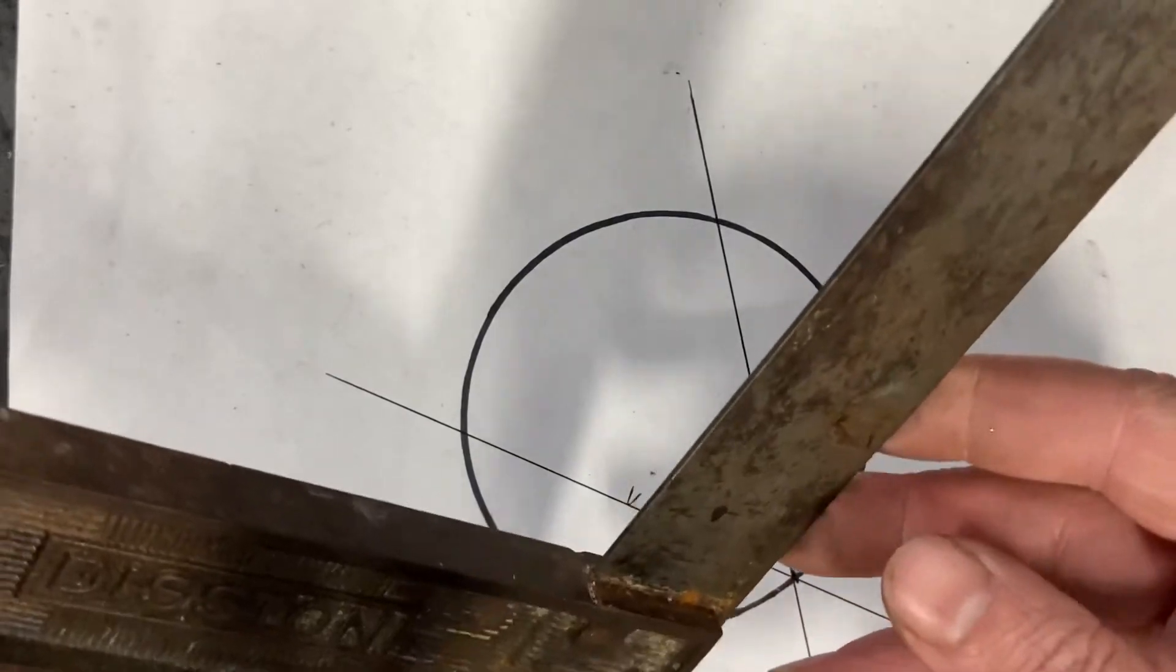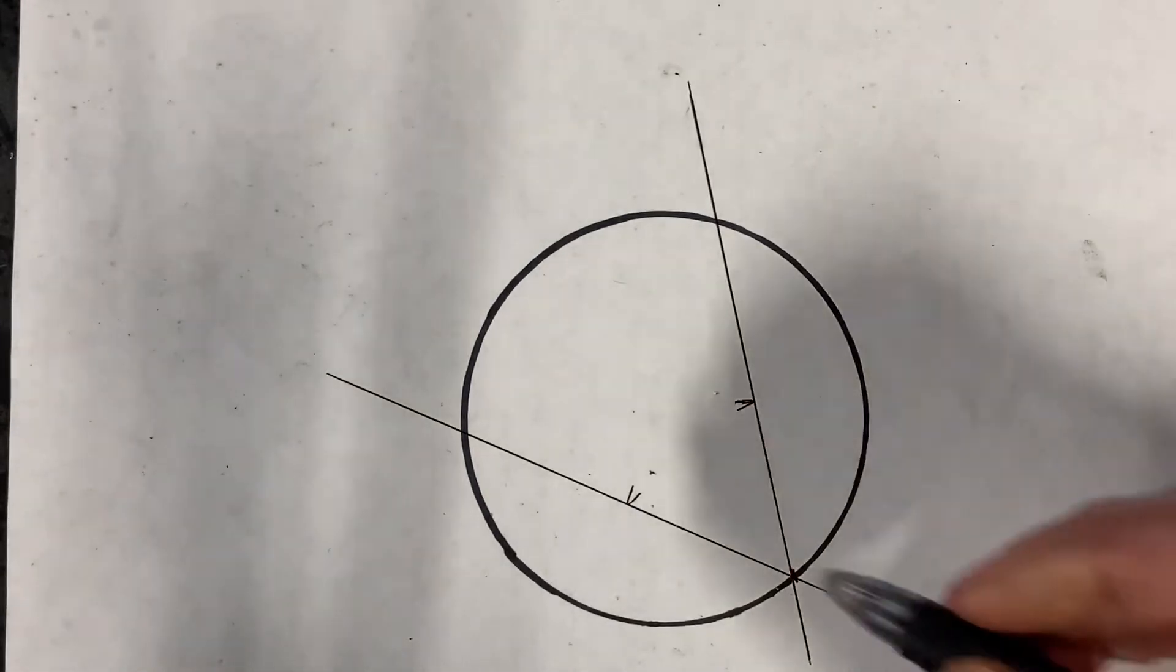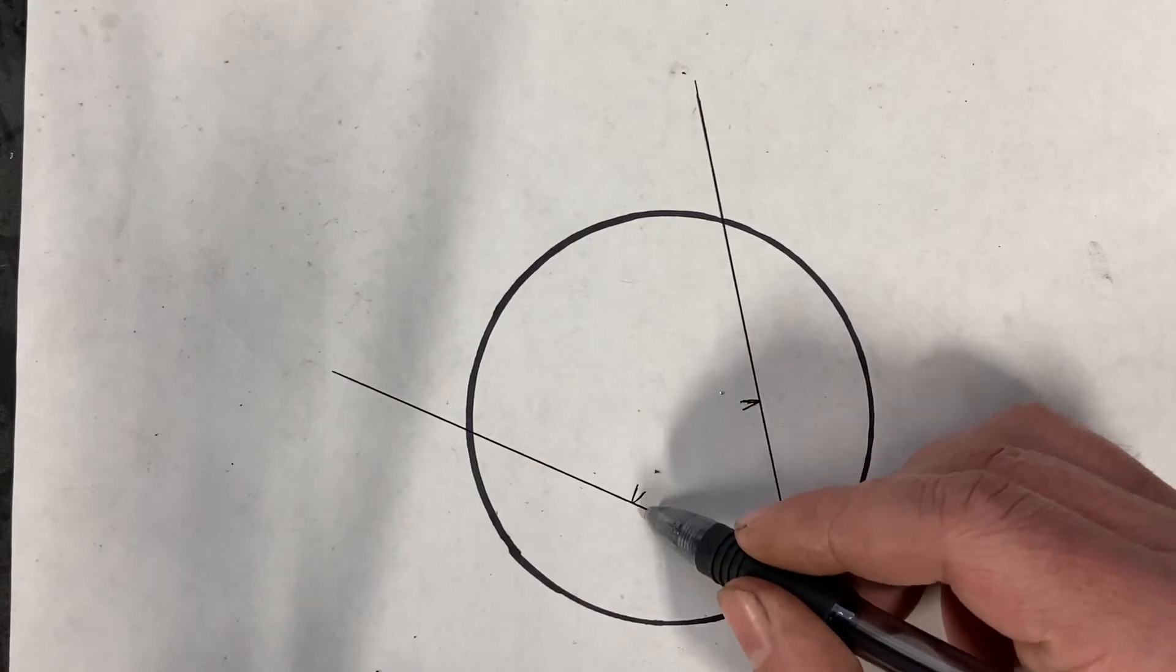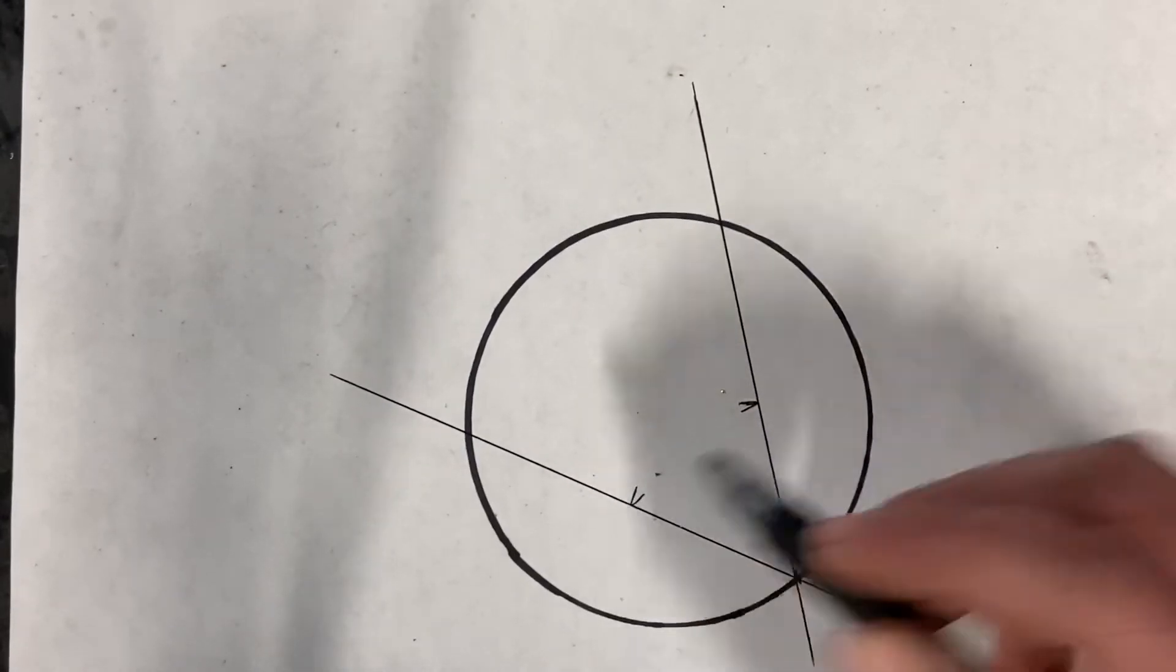But if you had a flat one, which I of course don't have, this part works a little bit better with that because you want a perfectly right angle from these lines at these Vs.